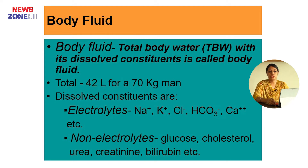Total 42 liters for a 70 kg adult male. The dissolved constituents are electrolytes and non-electrolytes.